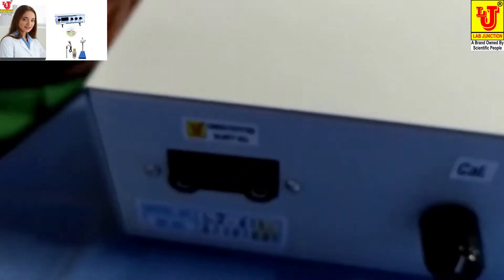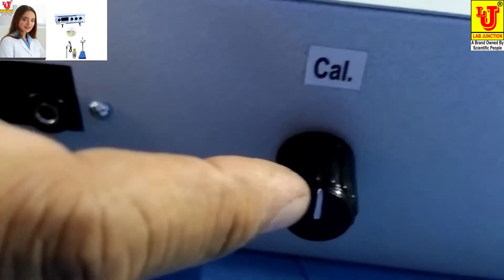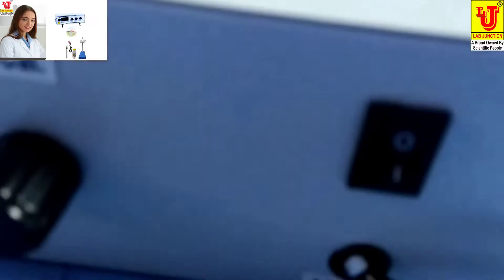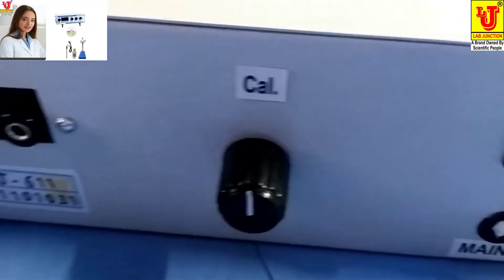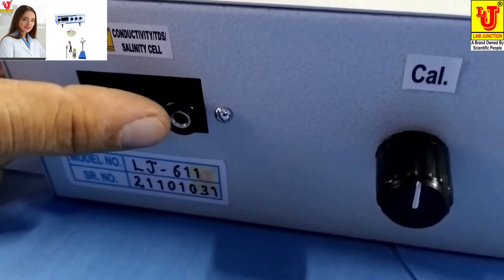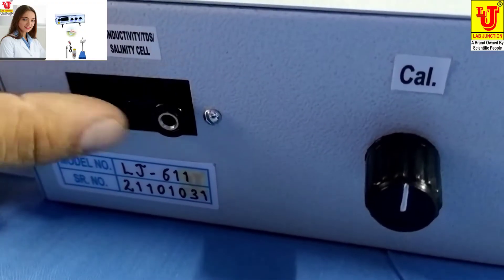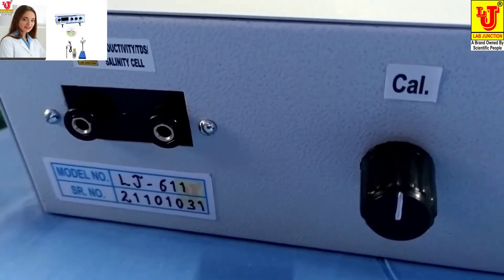In the back side, one control is for check position, one is switch off, and third one is banana sockets for conductivity cell.